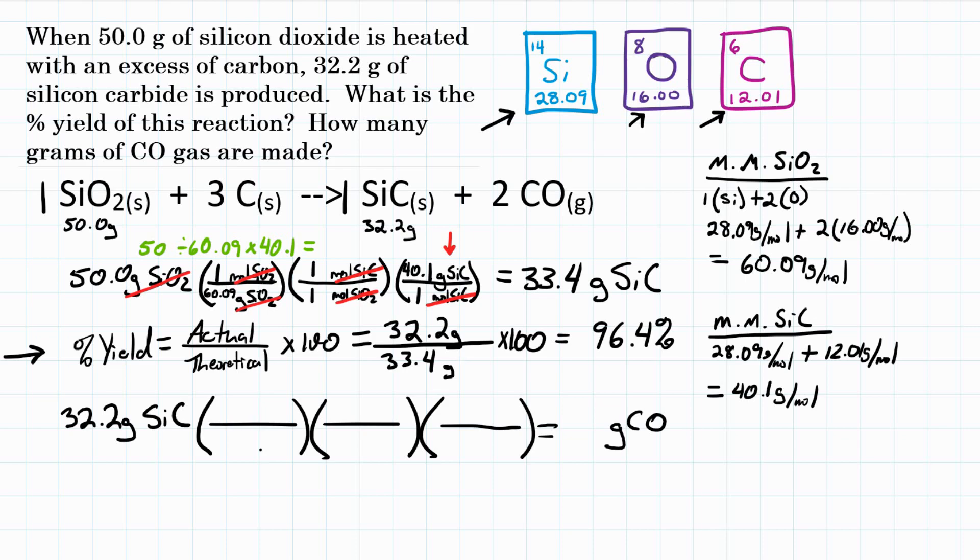So three conversion factors. The first one, we want to turn grams of SiC into moles of SiC. For every one mole, we already know that is 40.1 grams. We did that up here. So we're going to use that same number. So at this point, grams of SiC will cancel. And then our second step, we want to turn moles of SiC into moles of CO now. And we want to look at our coefficients for the second step. For every one mole of SiC, we're going to produce two moles of CO. Moles of SiC cancel. And then our last step, let's turn moles of CO into grams of CO. One mole of CO is how many grams? We need to calculate that.